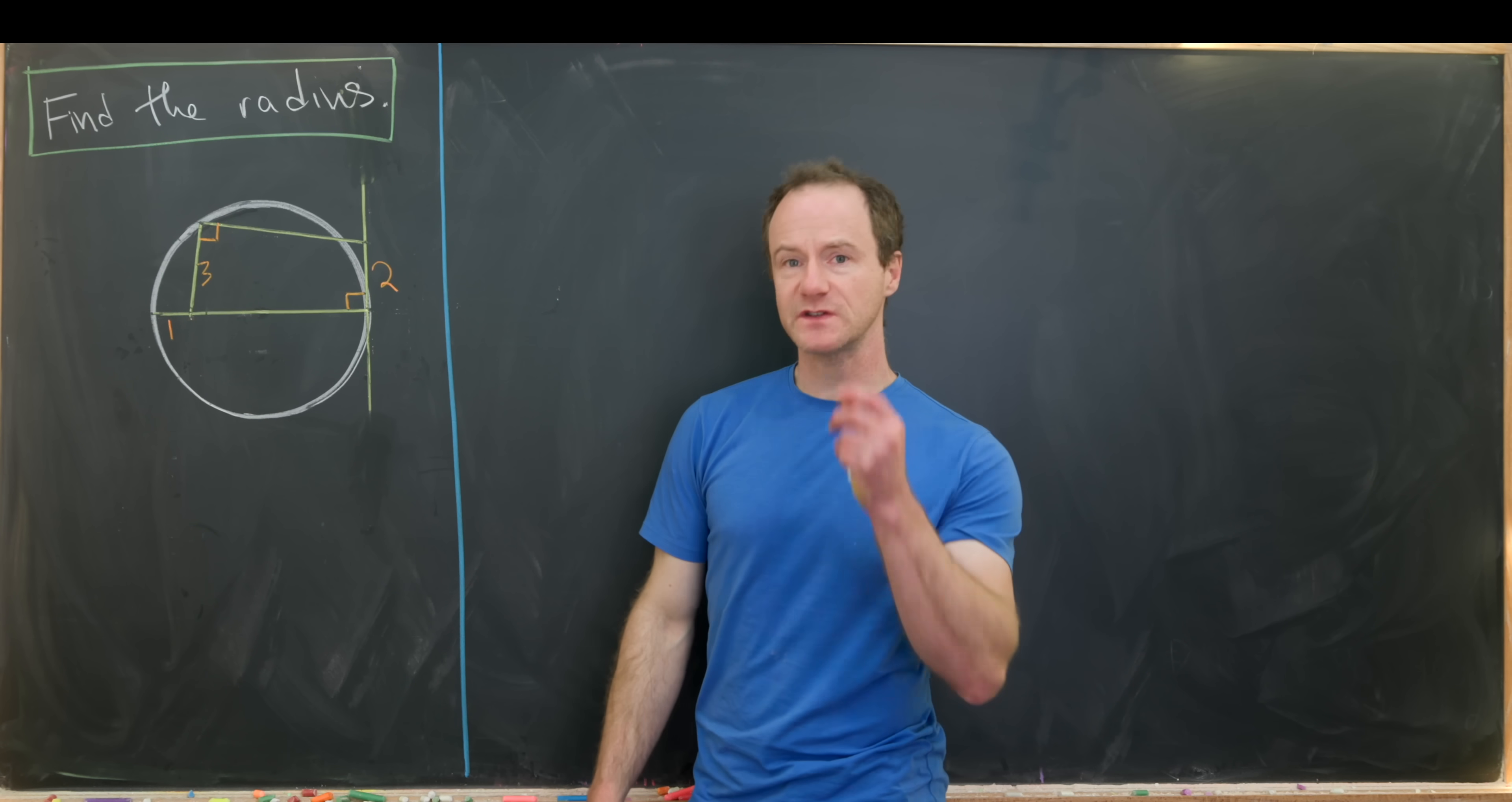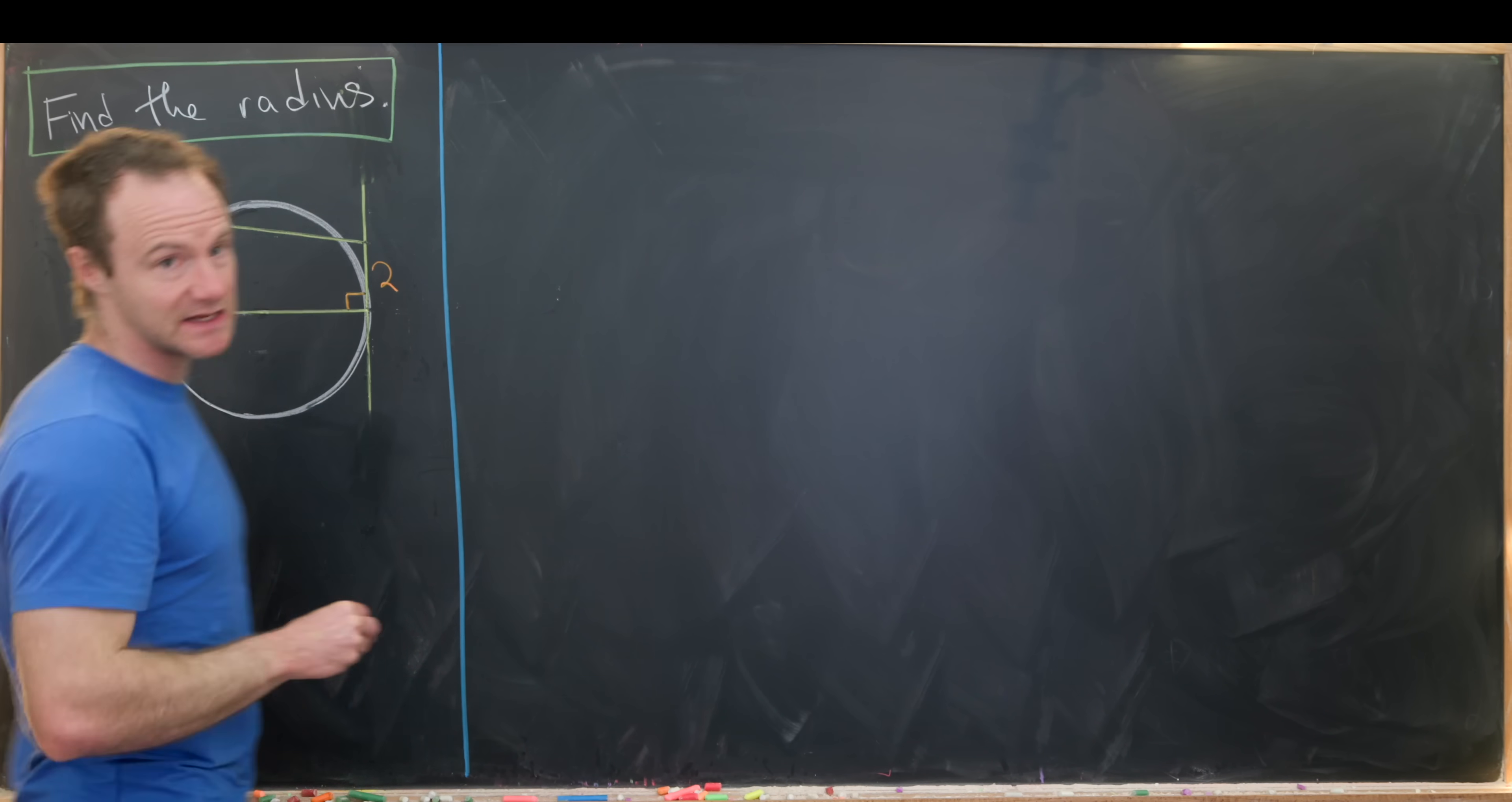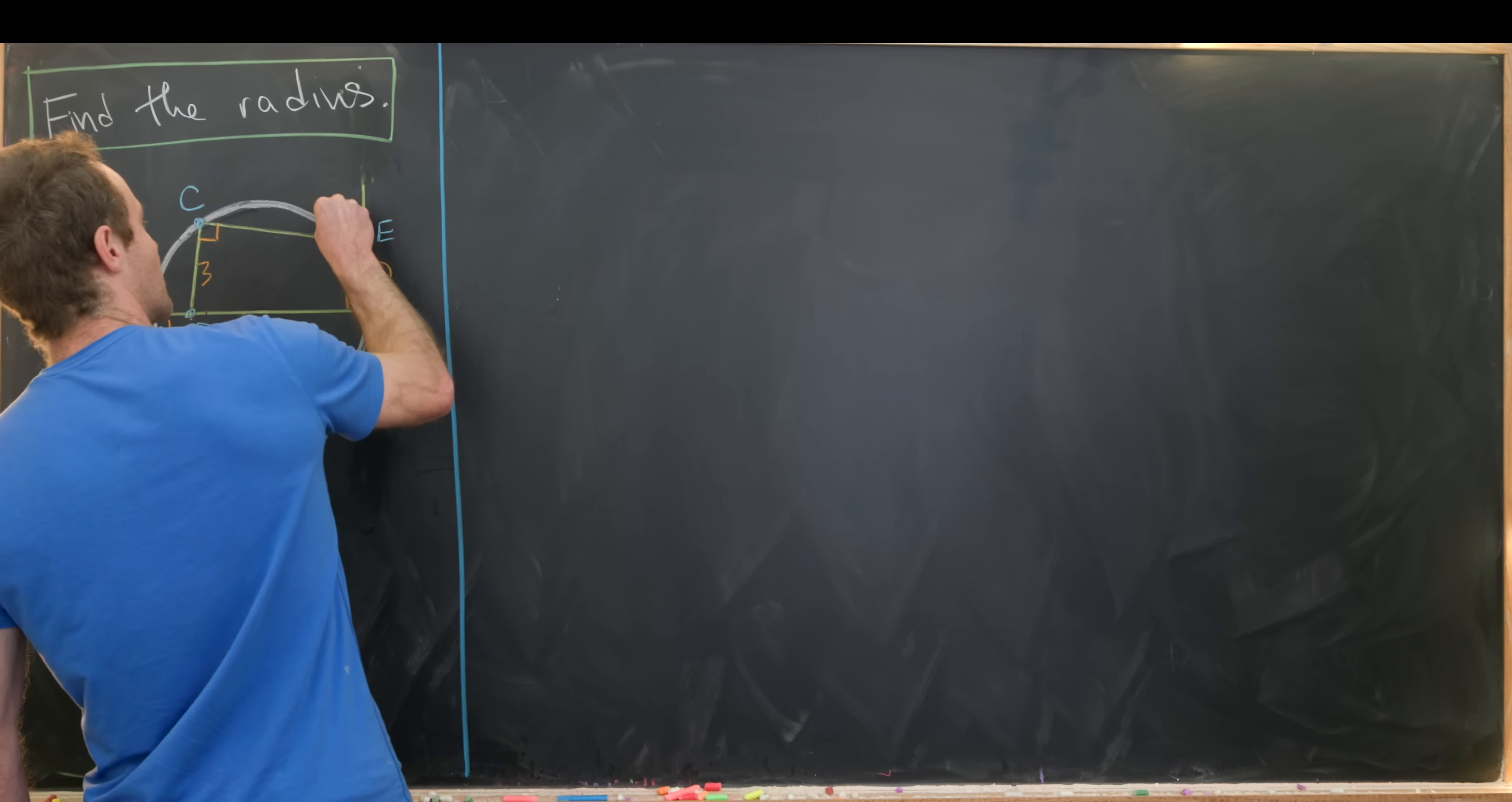So the first thing that I'd like to do is give some of these points some names. So I'll name this point right here A, this point right here will be named B, and then this point right here will be named C. And then over here, I'll name this point right here D, this point up here E, and then this point where we intersect with the circle F.